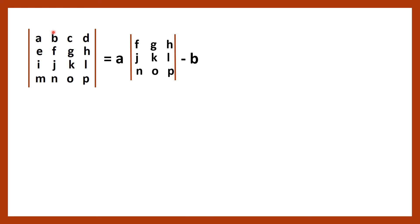Now we consider the second element. We assigned it a negative sign, so it is minus B. Once we consider B, we remove the row and column in which B lies. The remaining elements are E, G, H, I, K, L, N, O, P. So the second term is minus B into the determinant of E, G, H, I, K, L, N, O, P.